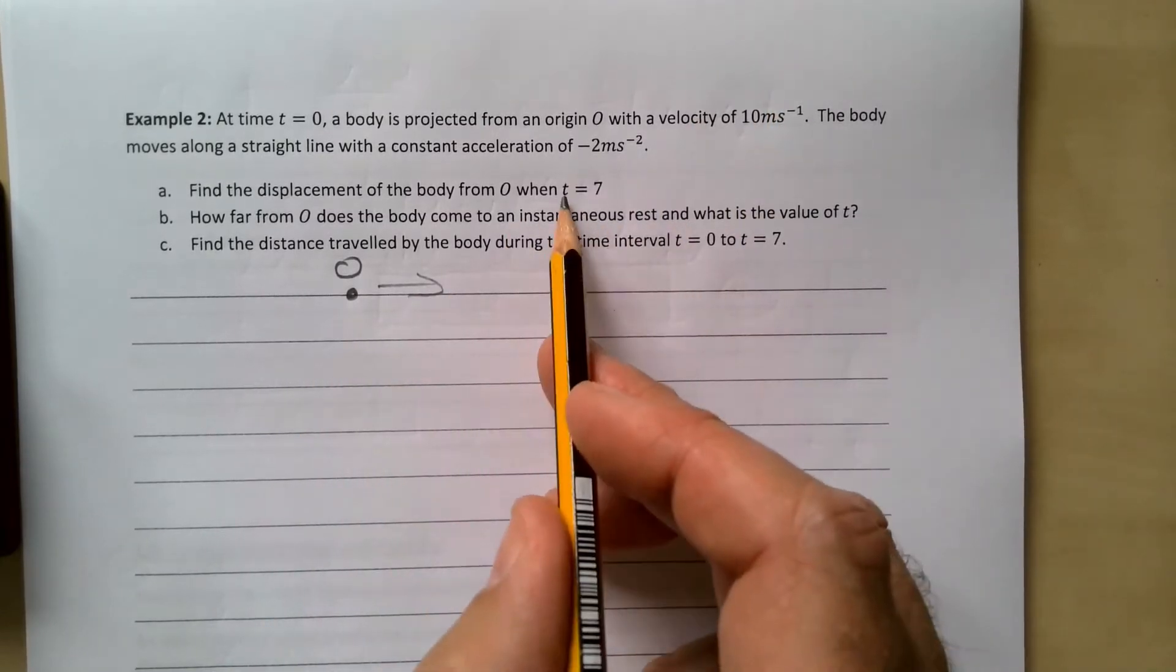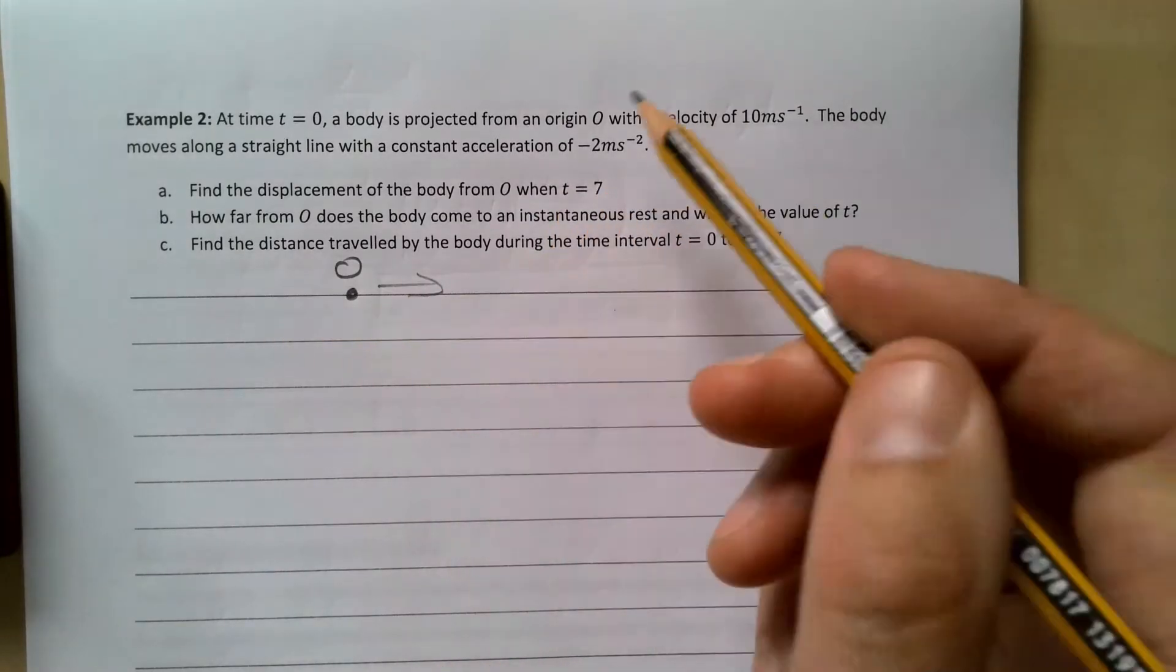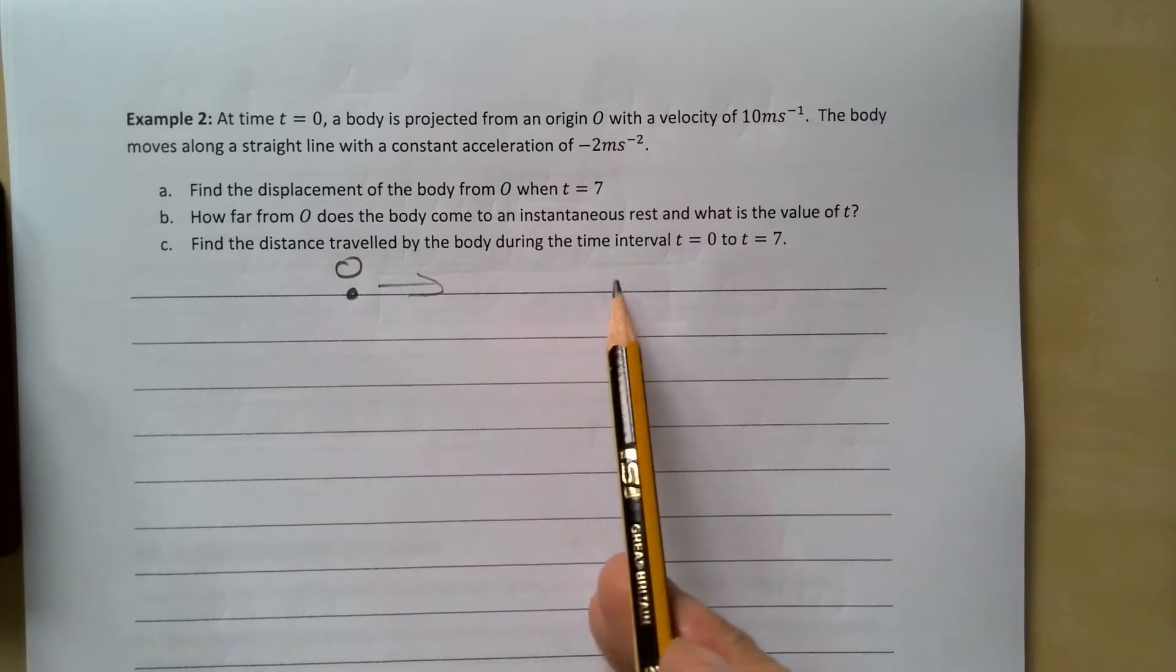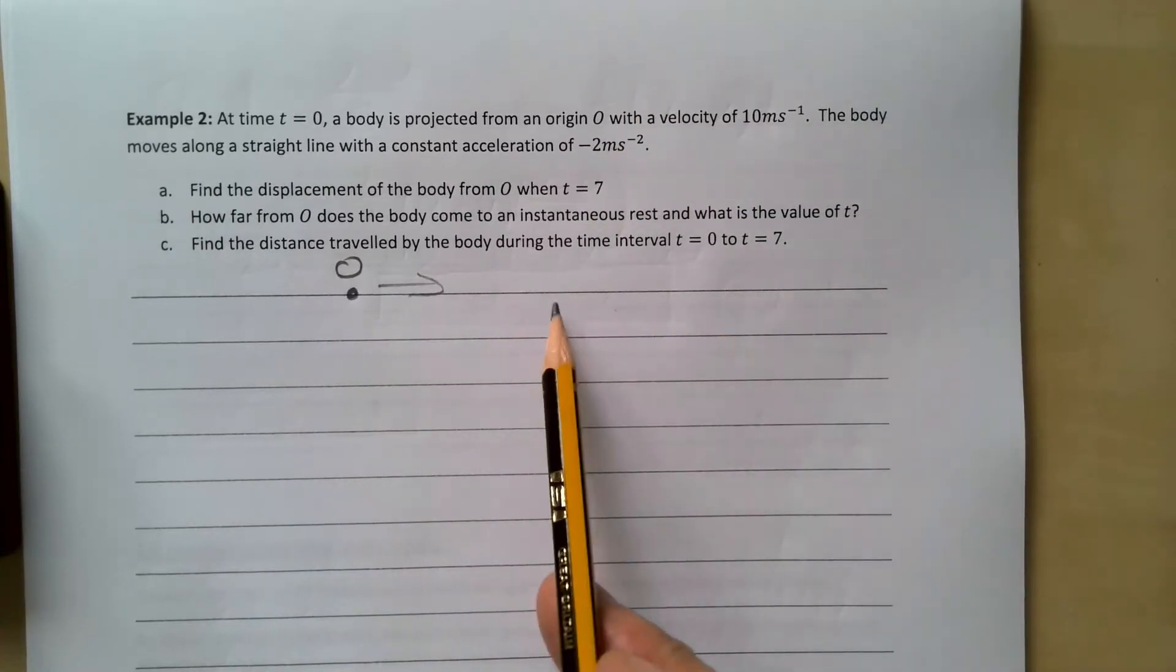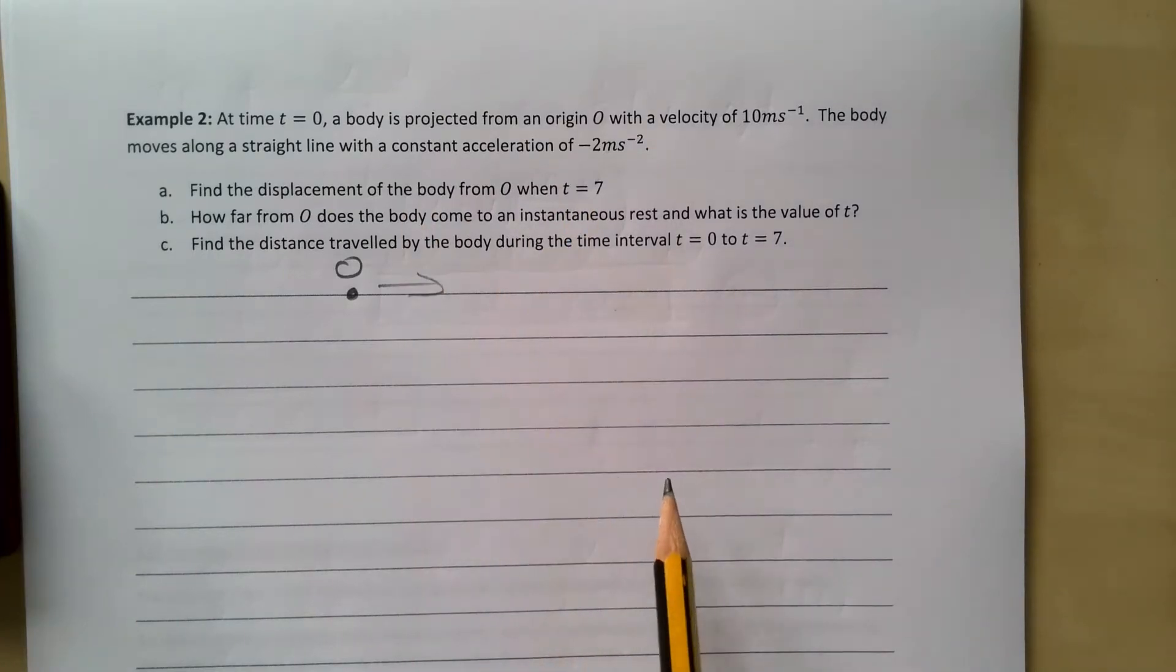Now something weird happens here because t is seven, so it's actually going to be going the other way because of the minus two. So it heads off this way, gets slower and slower and slower, and actually it's going to end up coming back this way. But it's up to you to be able to spot that and see what's happening in this particular question.